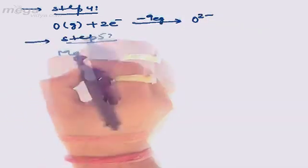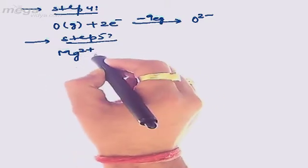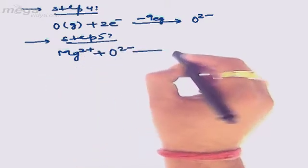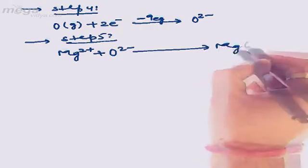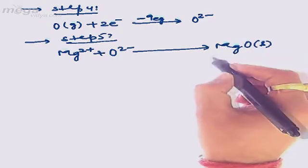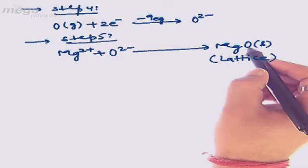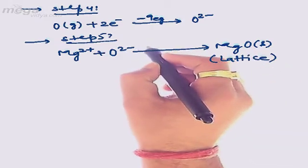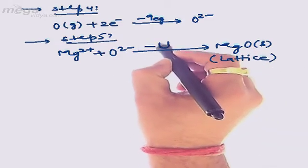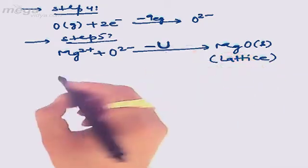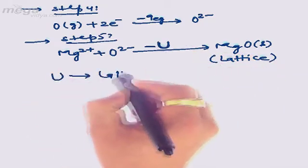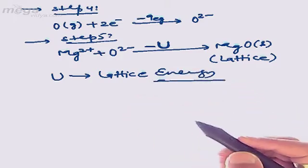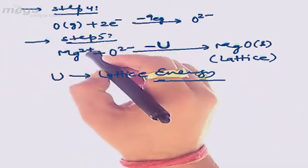In step five, Mg²⁺ obtained in step two and O²⁻ obtained in step four combine together to form magnesium oxide solid, which is the lattice. During the formation of this lattice, energy is released, and that energy is called the lattice energy. This is what we need to determine through the Born-Haber cycle.